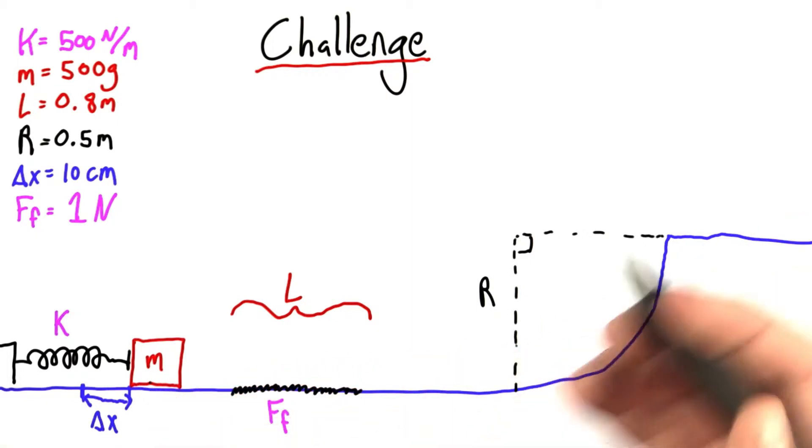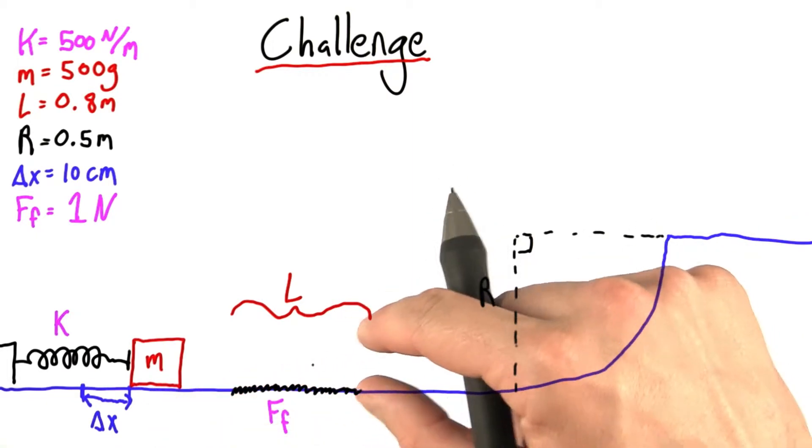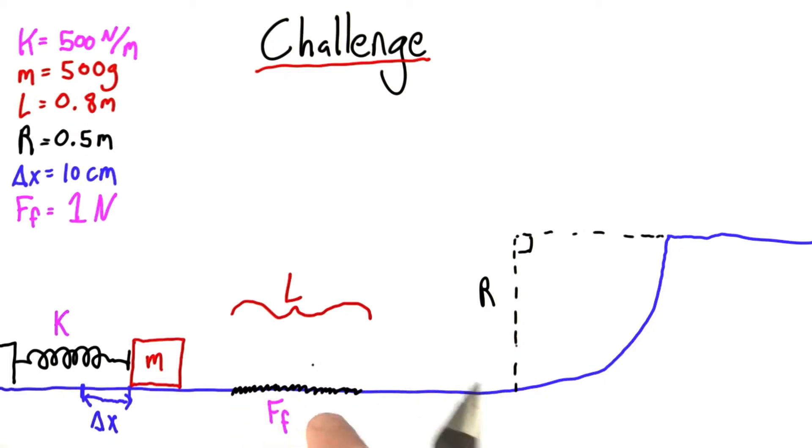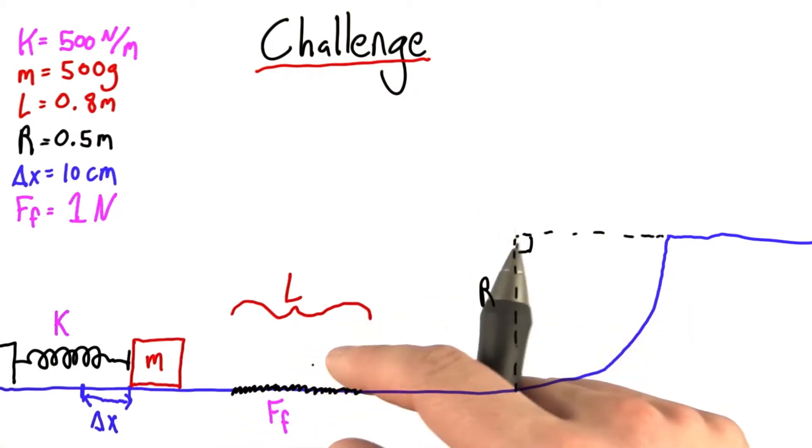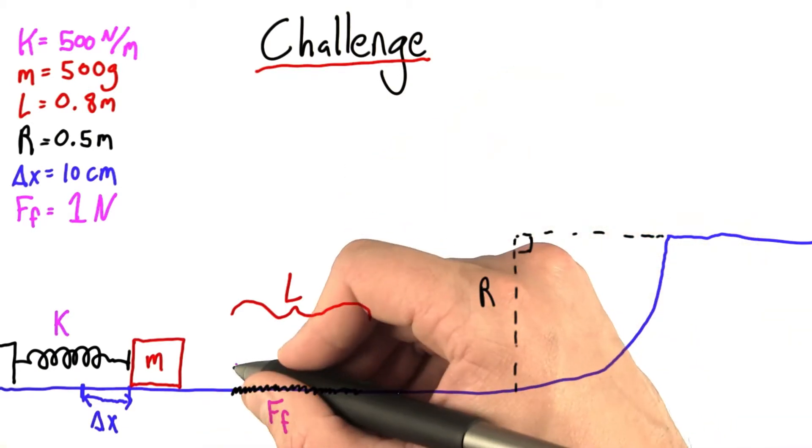the mass will run out of energy because every time the mass travels over this area of friction, it's going to lose some of its kinetic energy. It will lose all of its kinetic energy. It will go to 0, and the mass will have stopped somewhere on here. Your task is to tell me where.